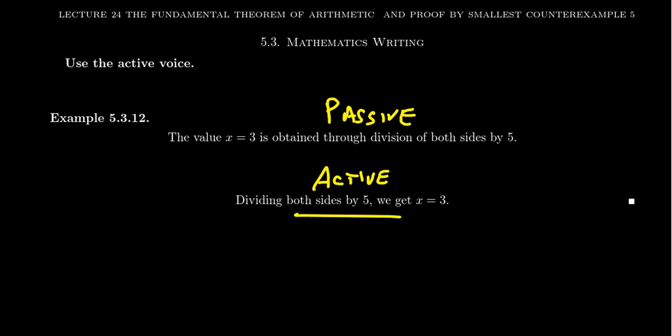We can all agree that this second sentence is shorter than the first one, much longer there on the screen. It says the exact same information. We have an equation, we divide both sides by five, we got the answer X equals three. So we got the solution to an equation and justified how we got it from the previous step: division by five.